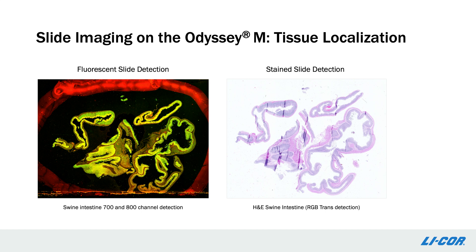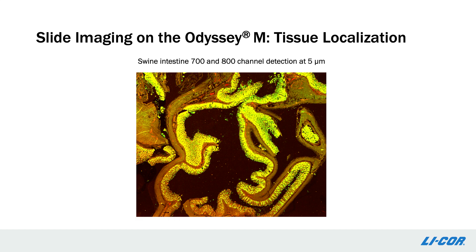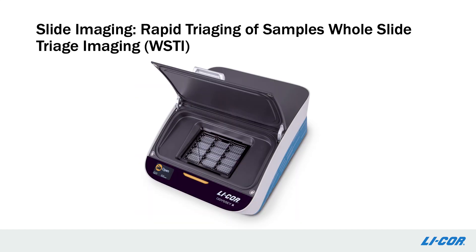Slides can be imaged in fluorescent and transillumination channels on Odyssey-M. Here, images of swine intestine stained with either target-specific antibodies in the 700 and 800 fluorescent channels or stained with H&E are shown. These images are taken at 5 micron resolution, which is high enough to see tissue localization between two images. This zoomed-in portion of the 5 micron image demonstrates the degree of detail Odyssey-M can provide — we see well-resolved intestinal structure. In addition, the line scanner on Odyssey-M allows rapid scanning: it takes about 30 minutes to image 12 slides in one channel, meaning large sets of slides can be quickly scanned and triaged to determine which slides should be taken on to higher-resolution microscopy.